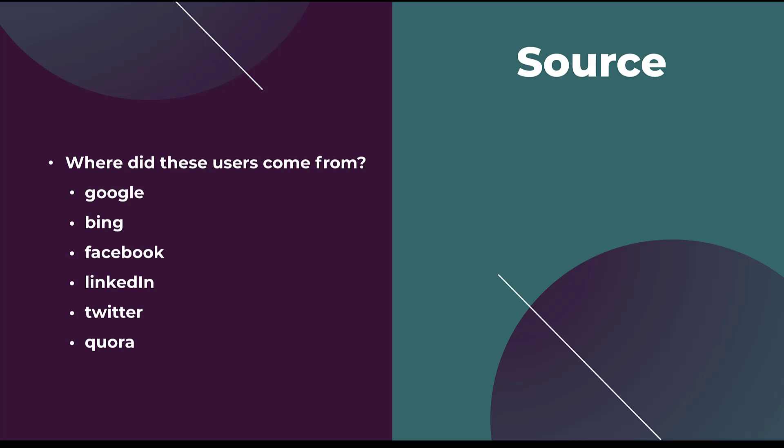The first is Source, and I always treat this as: where did these users come from? What platform was I advertising from when I utilized this UTM source? So everything here is going to be, for me: Google, Bing, Facebook, LinkedIn, Twitter, Quora — anything along those lines. You'll notice that these are all lowercase — I'll talk about that in a little bit.